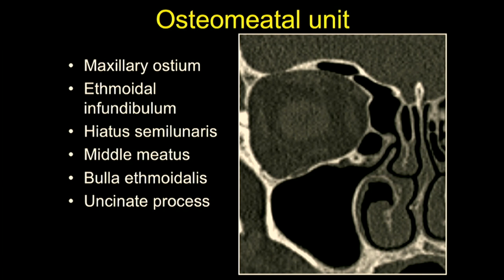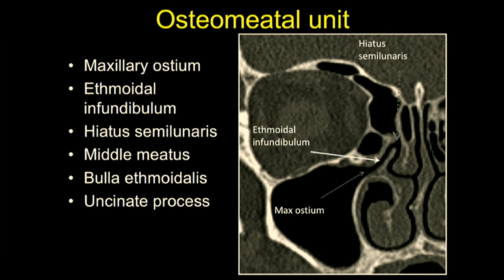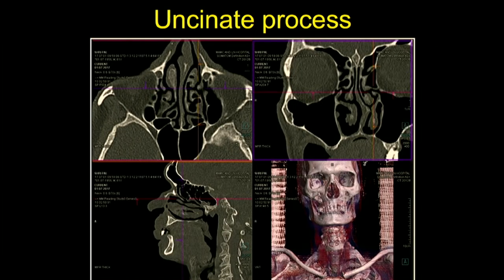Let's begin with understanding the osteomeatal unit. Remember, it's a three-dimensional space — it is not something seen on just one cardinal image. This is the representative cardinal scan which best delineates most of the components of the osteomeatal unit, but it is actually a 3D drainage pathway of all those anterior sinuses. This is the maxillary ostium at the anterior and superior corner of the maxillary sinus, draining via the ethmoidal infundibulum and the hiatus semilunaris into the middle meatus. The uncinate process attaches inferiorly to the inferior turbinate, and the bulla ethmoidalis is usually the largest cell of the anterior ethmoidal group — these are the main components of the OMU seen in this coronal picture.